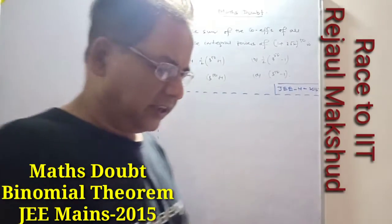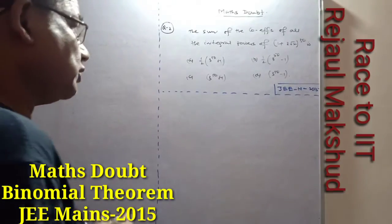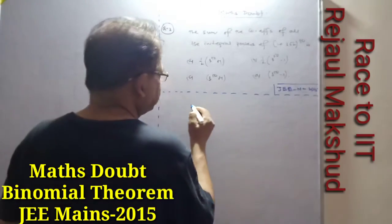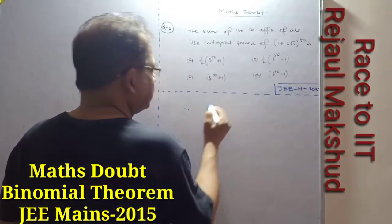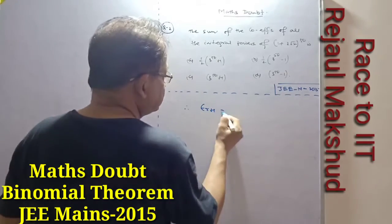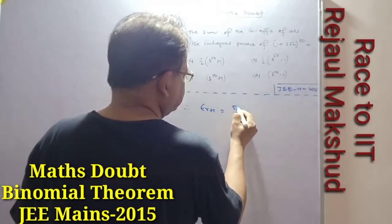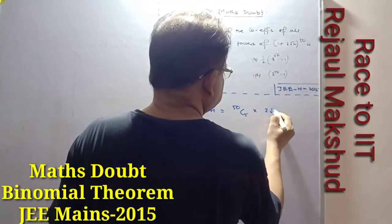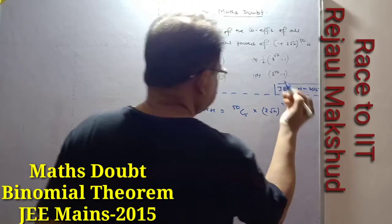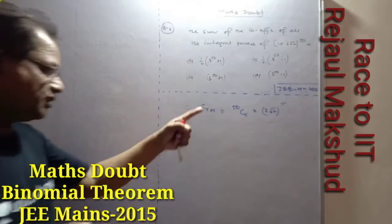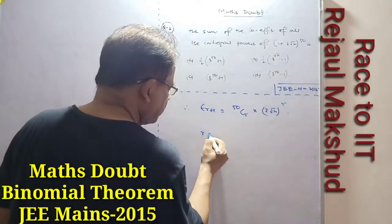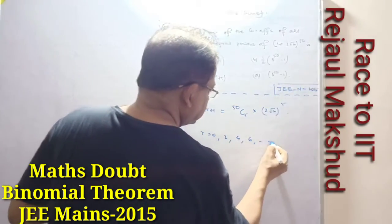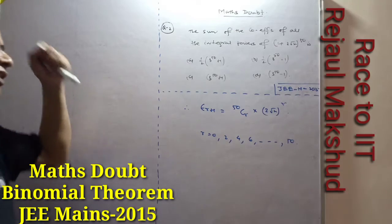So the general term T(r+1) is 50Cr into (√2)^r. So this is where (√2)^r will give an integral power. Integral power will come when r = 0, 2, 4, 6, up to 50 — at that time it gives an integral power.